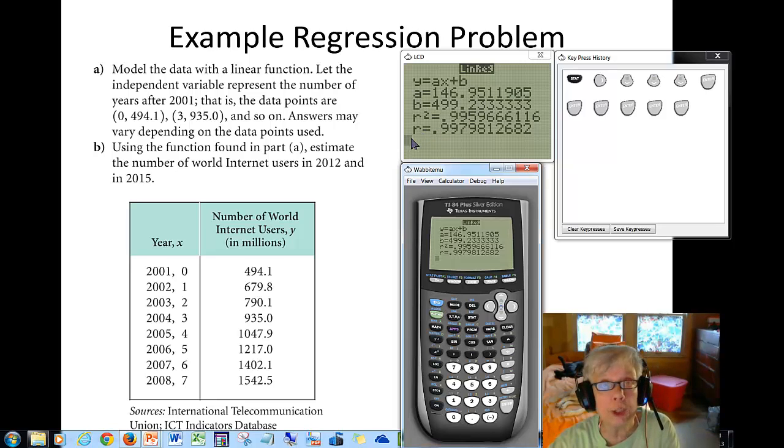Now whether or not your regression equation is a good predictor or not largely depends on your r, which is called the correlational coefficient. That's the reason at the very beginning we went second catalog diagnostic on - so that your r would appear. Now r is kind of a complicated number. If the number is very close to one, and this one is, or if the number is very close to negative one, that means your equation could be a good predictor. On the other hand, if this number is close to zero, if it's a real small positive decimal or a real small negative decimal, your line is going to be a pretty lousy predictor.